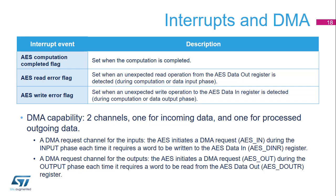Direct memory access requests are generated internally for both incoming and outgoing data. The DMA channel must be configured in memory-to-peripheral or peripheral-to-memory mode, with a data size equal to 32 bits.